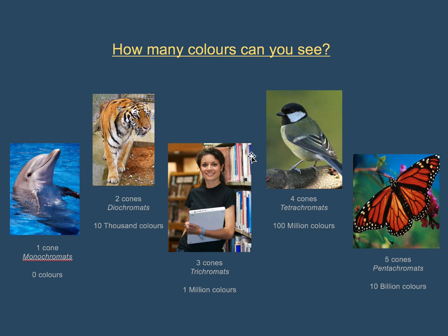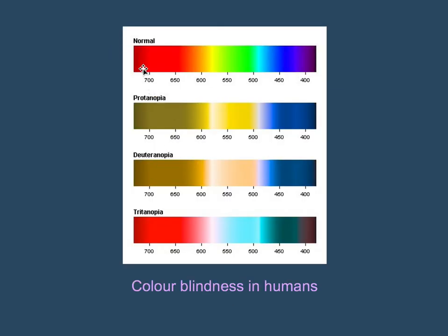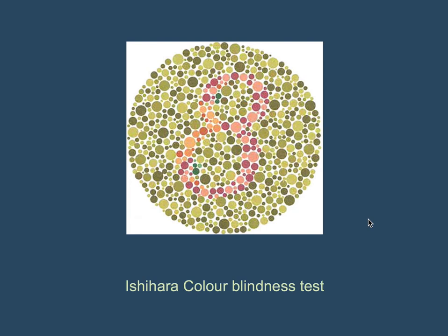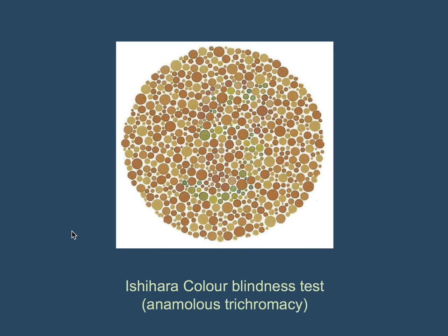When humans have color blindness, it means one of their cones is affected, making them more like dichromats with limited color vision. There are three types of color blindness depending on which cone is affected, and the colors available to color-blind humans are much more limited. We test for color blindness using the Ishihara color blindness test, where people are shown arrays with a number inside — if you can see the number, you're not color blind. There's also testing for anomalous trichromacy, another rare form. Actually, I'm just playing a joke on you — there's no number in that last one.